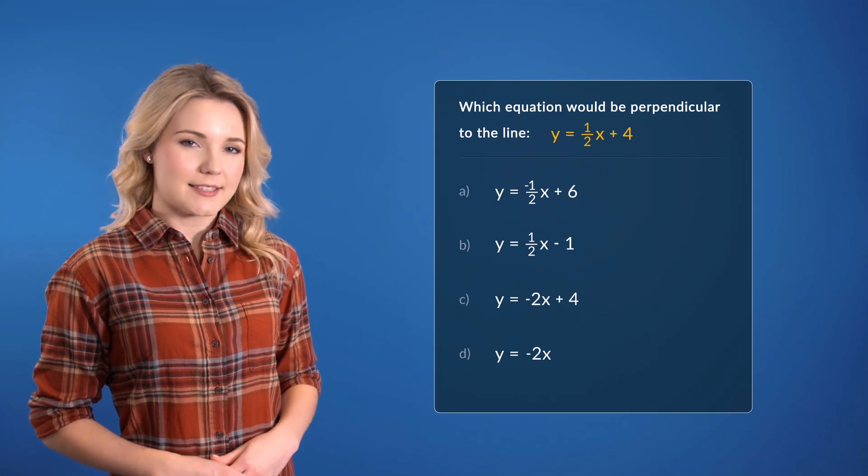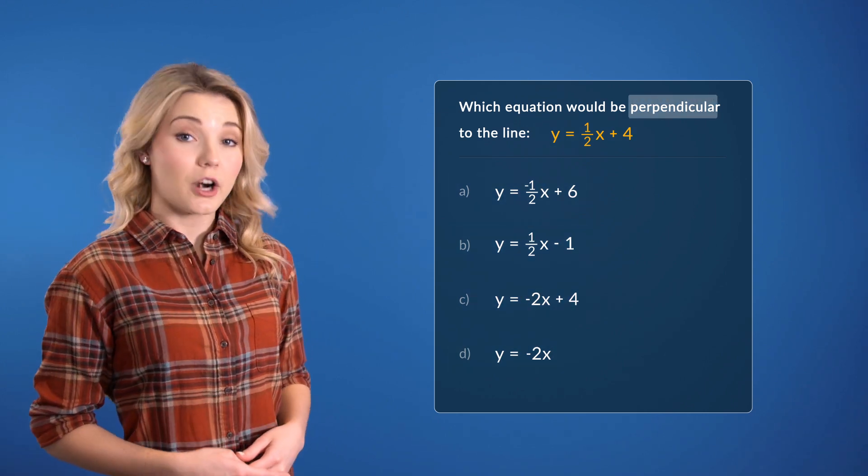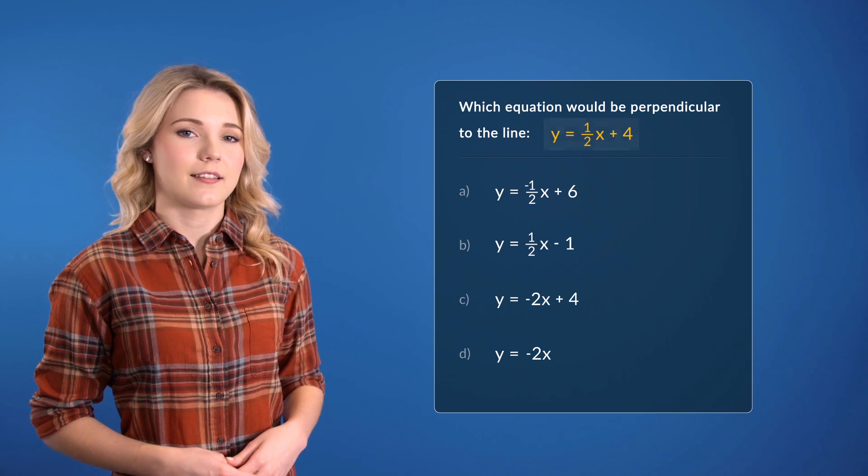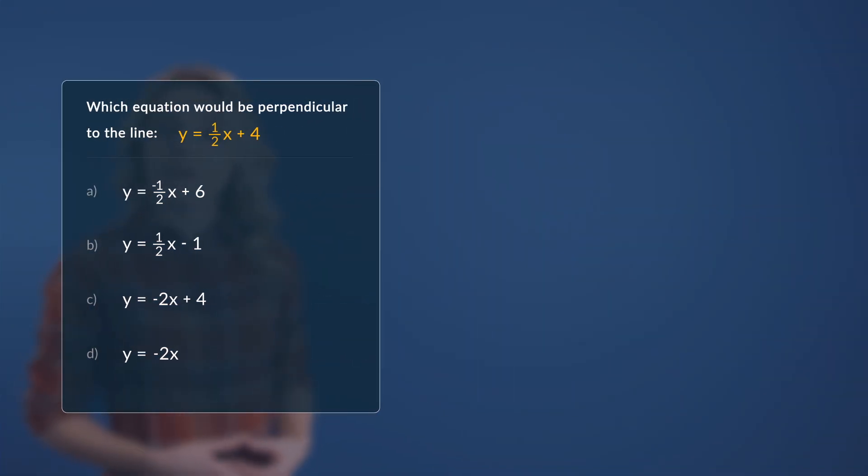Awesome! So let's say I gave you this equation. Which of the following lines would be perpendicular to this line? Well, since we are looking for a line that is perpendicular to this line, we need to start off by looking at the slope, which we know as being the m, or the value in front of the x, in the slope-intercept form. So we can identify that as being the 1 over 2 for the slope.